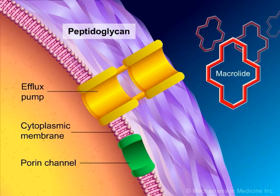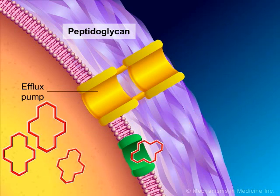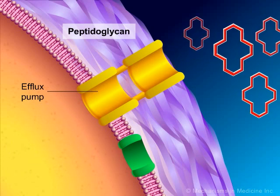Despite the presence of these efflux pumps, macrolide antibiotics continue to enter the bacteria. However, once inside the cytoplasm of the bacteria, these efflux pumps actively remove the macrolide antibiotics before they have a chance to reach their target, the 50S ribosomal subunit, and bacterial protein synthesis is unaffected.